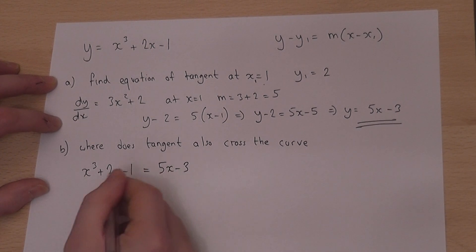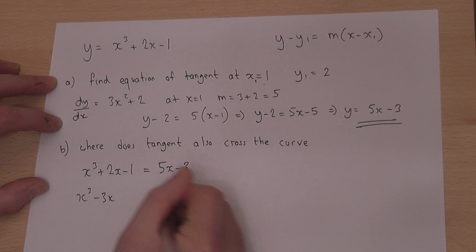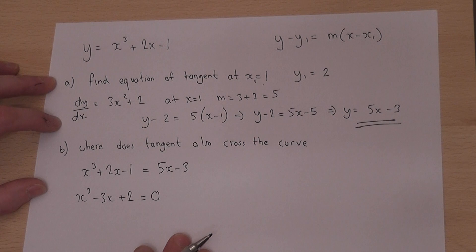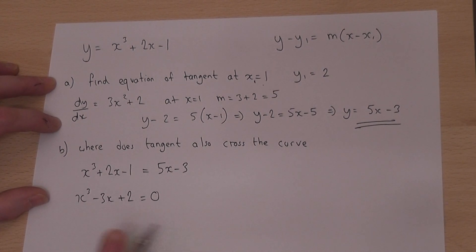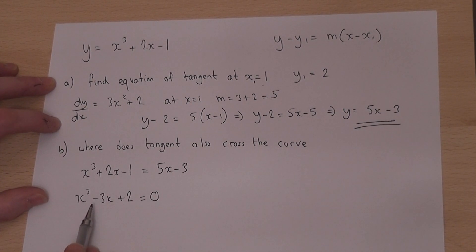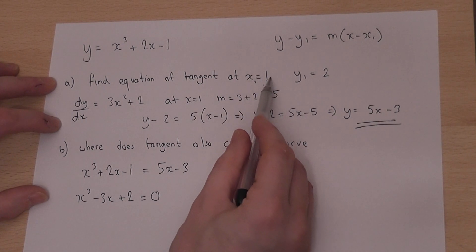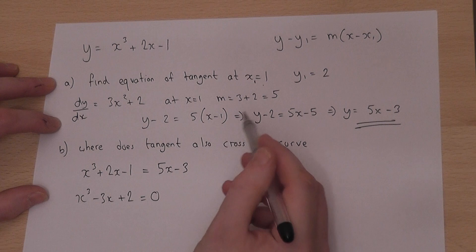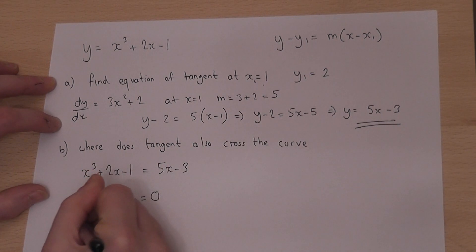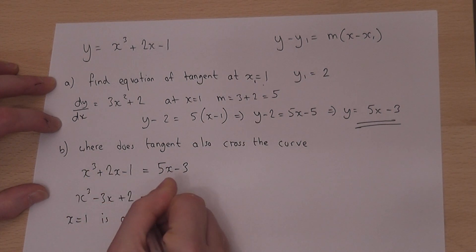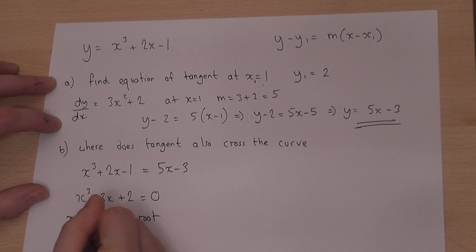If I take away 5x and add 3, I get x cubed take away 3x plus 2 equals 0. So to find where these intersect, I must solve that cubic equation. But I know that one of the solutions is x equals 1, so one of the roots is x equals 1. So if x equals 1 is a root, then x minus 1 is a factor.